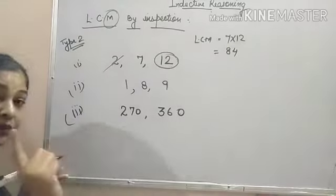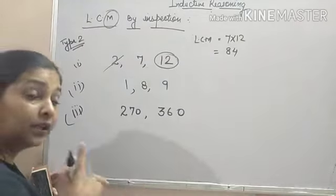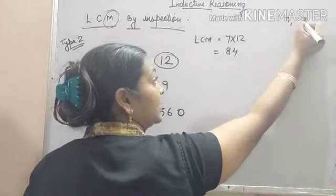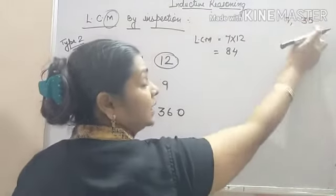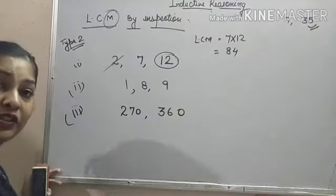But always keep one thing in mind. The other number should not be multiple of the prime number. Suppose, if the numbers are 7 and 35, then 35 is multiple of 7.